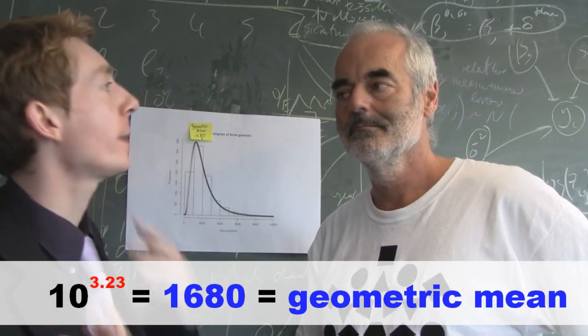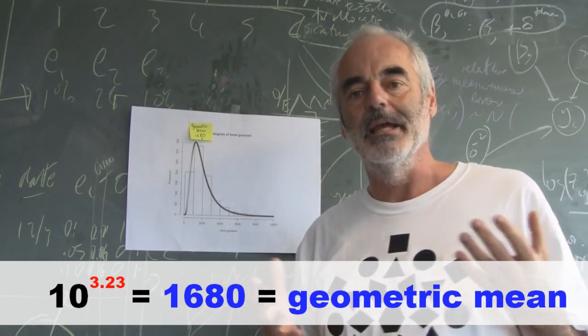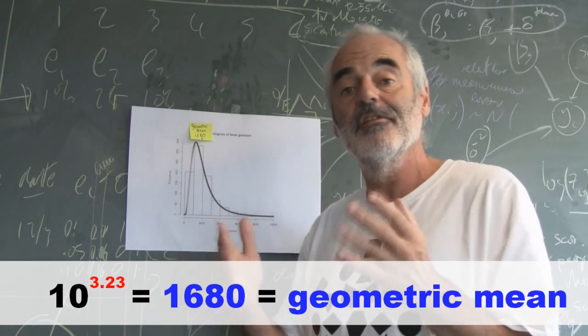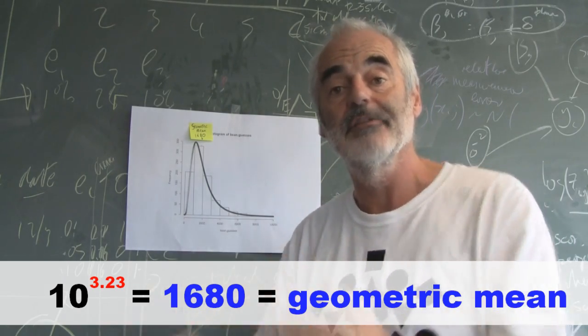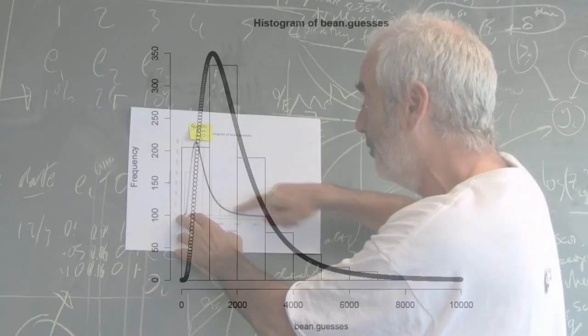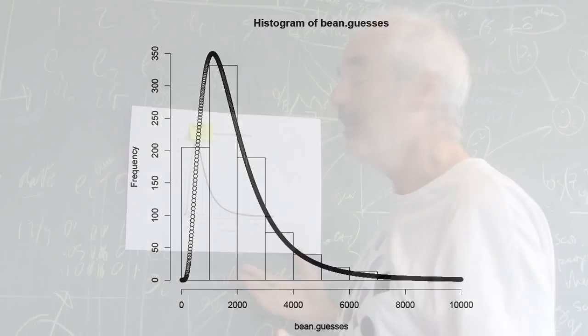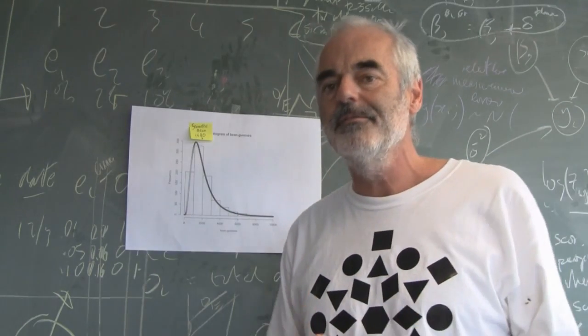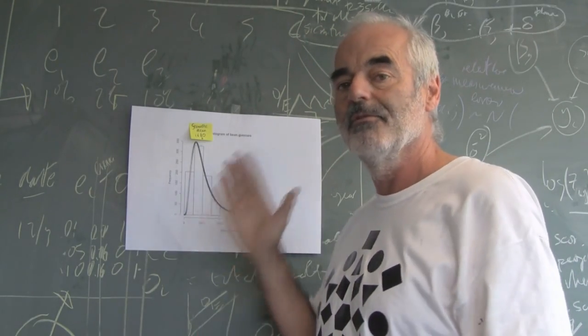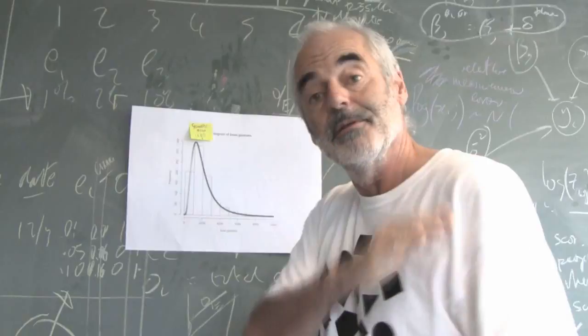The geometric mean is a good measure to use if you think the sort of mistakes people make are proportional mistakes. In other words, they're just as likely to get double the answer as half the answer. And, if you think that, and that's what gives rise to shapes like this as a distribution, then you should use the geometric mean. So, I think, if I really believe there wasn't any systematic bias in people's judgments, I would say 1,680 would be our best judgment.